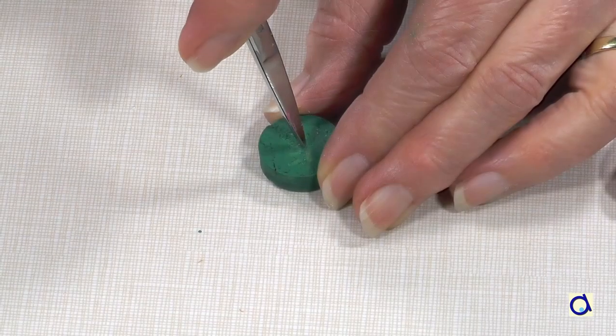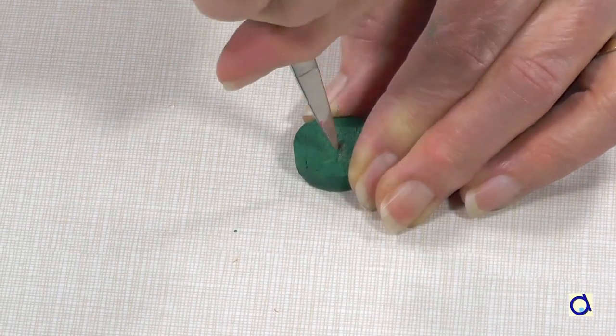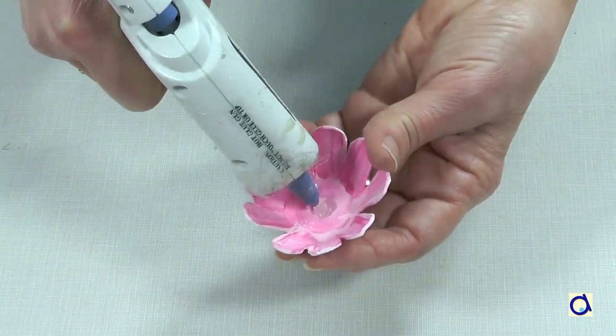Take the slice of cork and make a hole in the middle with small scissors. Put hot glue in the center of the flower and glue the golden center.